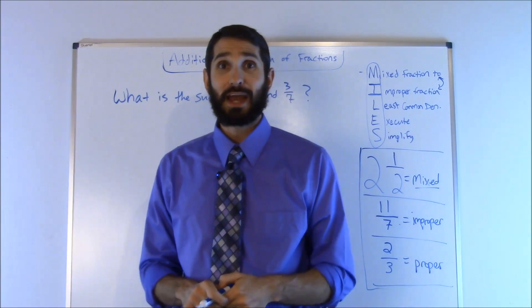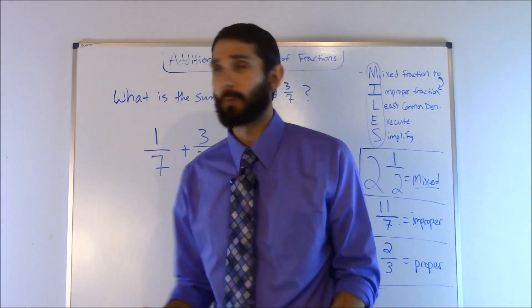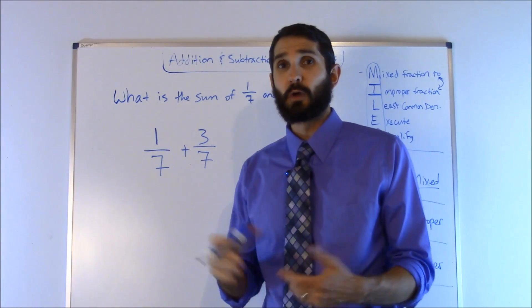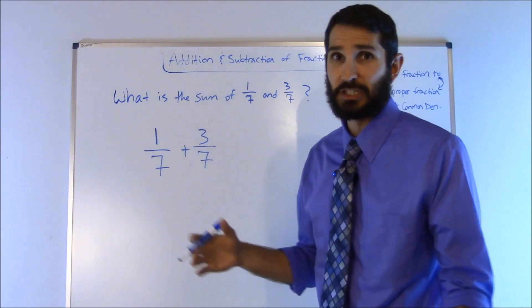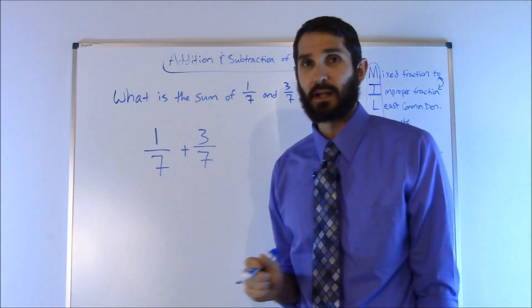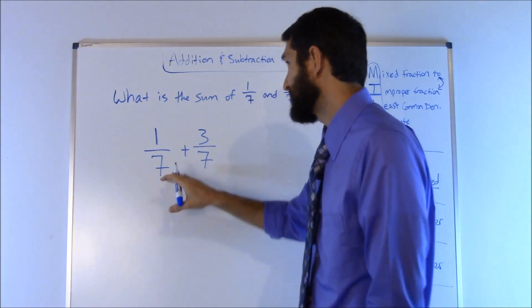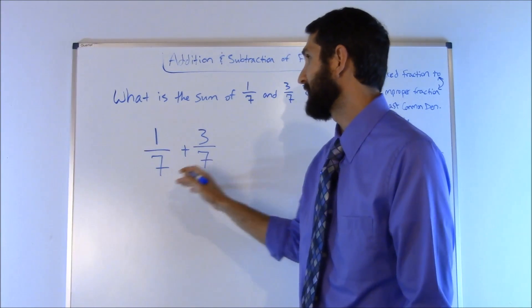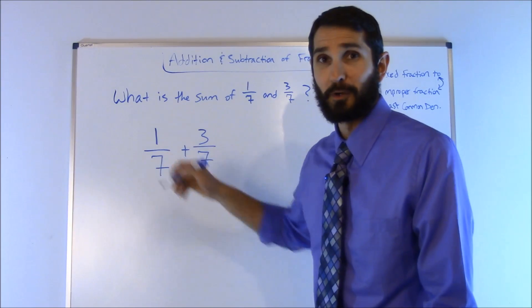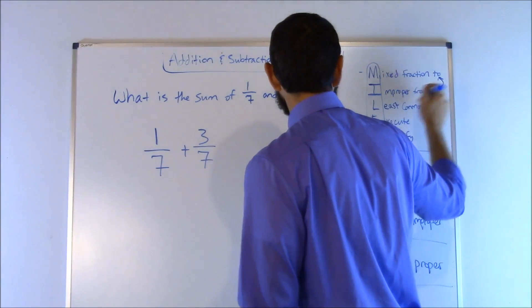On the ATI TEAS exam, math questions are often written in sentence format. For example: what is the sum of 1 seventh and 3 sevenths? Since 'sum' means addition, we write 1 over 7 plus 3 over 7. Going through MILES — M: are there any mixed fractions? No, these are proper fractions, so we don't need to convert to improper fractions.